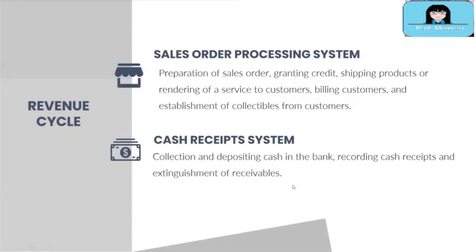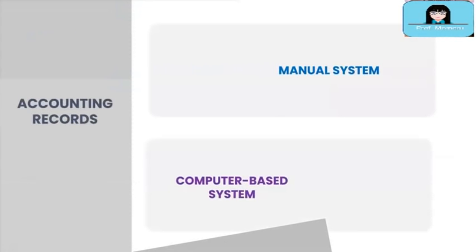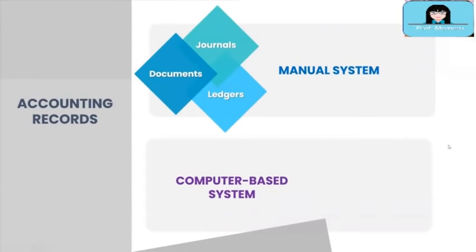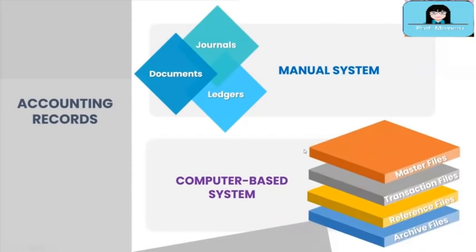Now you have a general understanding of the transaction cycles and their subsystems. We are now going to discuss the types of accounting records used in the transaction cycles. The specific names of accounting records for each cycle will be discussed in separate modules. For now, we will focus on the types of accounting records under manual and computer-based systems. For a manual system we have documents, journals, and ledgers. For a computer-based system we have master files, transaction files, reference files, and archive files.